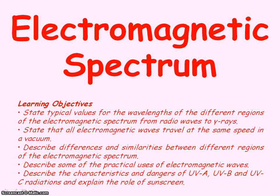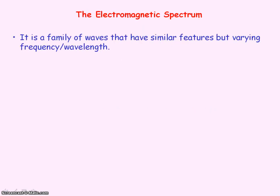We're going to be looking at the waves that make up the electromagnetic spectrum. The electromagnetic spectrum is made up of a family of waves that have common properties but do have different frequencies and wavelengths.